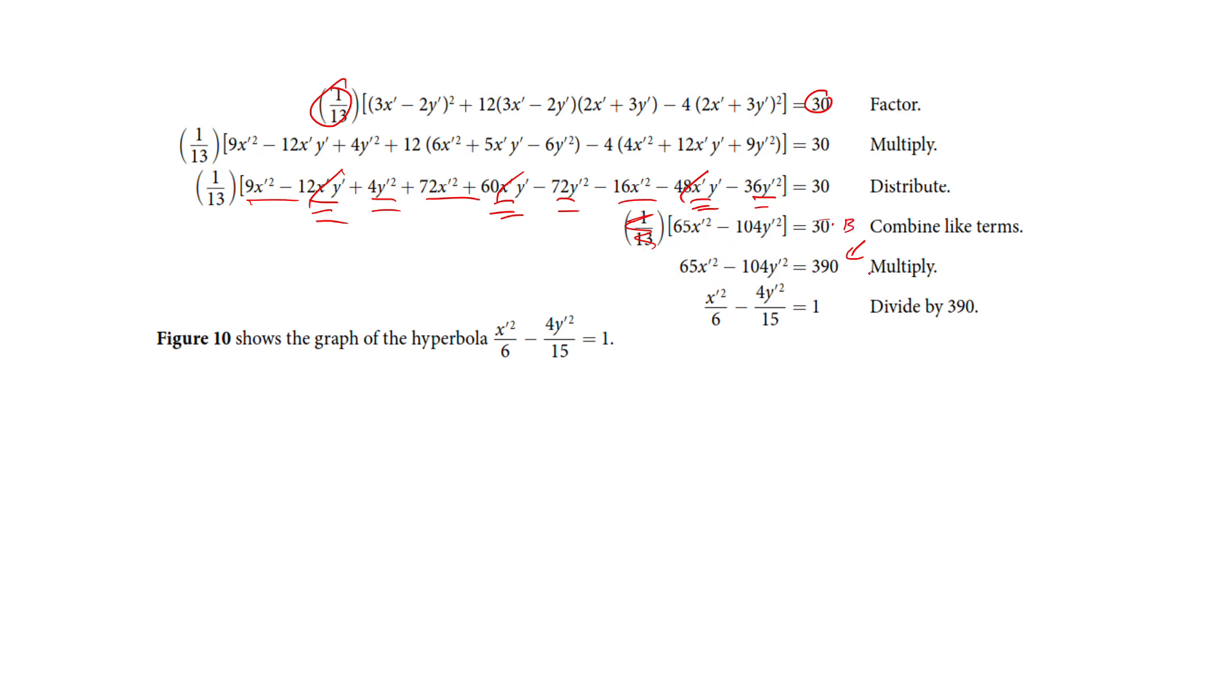Okay. Now, we don't want to leave it like this. We divide through every term by 390. So we can get it looking like this. Okay. So we have a hyperbola because we've got the negative in there. And now, this is a strange one, but here's our rotated equation.